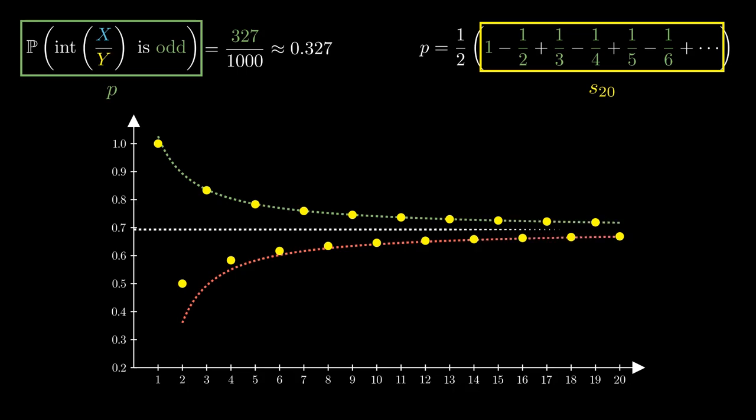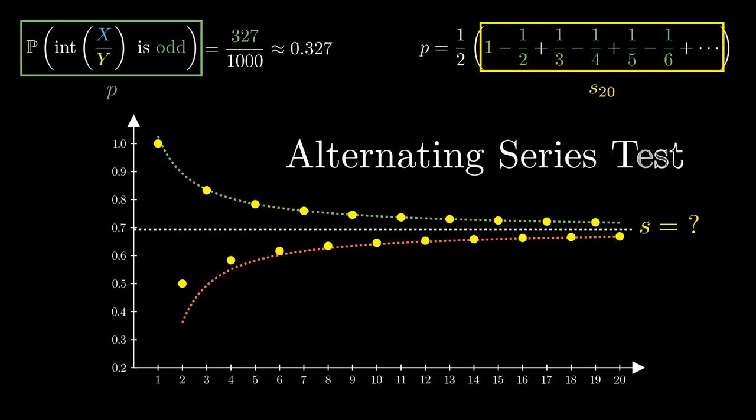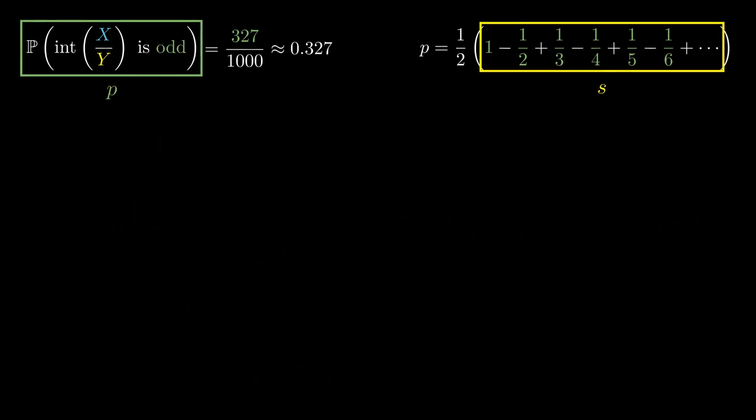Let's call this number S. By the way, this really does converge according to what we call the alternating series test. For a proof that this works, check out the document in the description box below. So now we know that the series does converge. But can we know what it converges to?